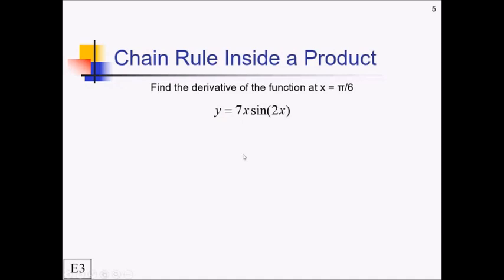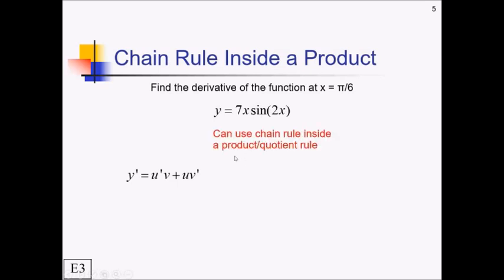On this next example, we're throwing a few new things in. We want the derivative of a function at a specific x value, pi over 6. And we have an actual product here: 7x times sine of 2x. So we're going to need the product rule — u prime v plus u v prime. You can use the chain rule inside of a product or quotient rule; that's completely allowed.